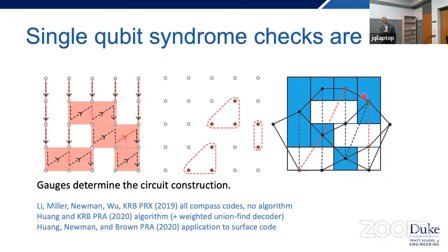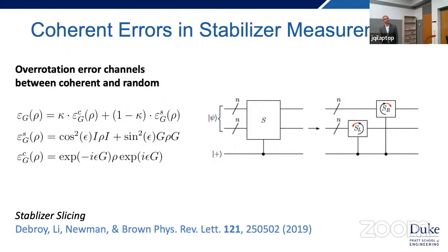Even though the gauges are fixed, the gauge structure leaves a memory in the code, allowing fault-tolerant measurement of stabilizers of arbitrary size. My student Shilin Huang: I asked him to calculate performance for all kinds of code geometries — every little square is like the surface code, long rectangles like Bacon-Shor. He came up with a fast algorithmic surface code decoder called weighted union-find, a great compromise between the accuracy of minimum-weight perfect matching and the speed of union-find decoding from Delfosse and Nickerson.